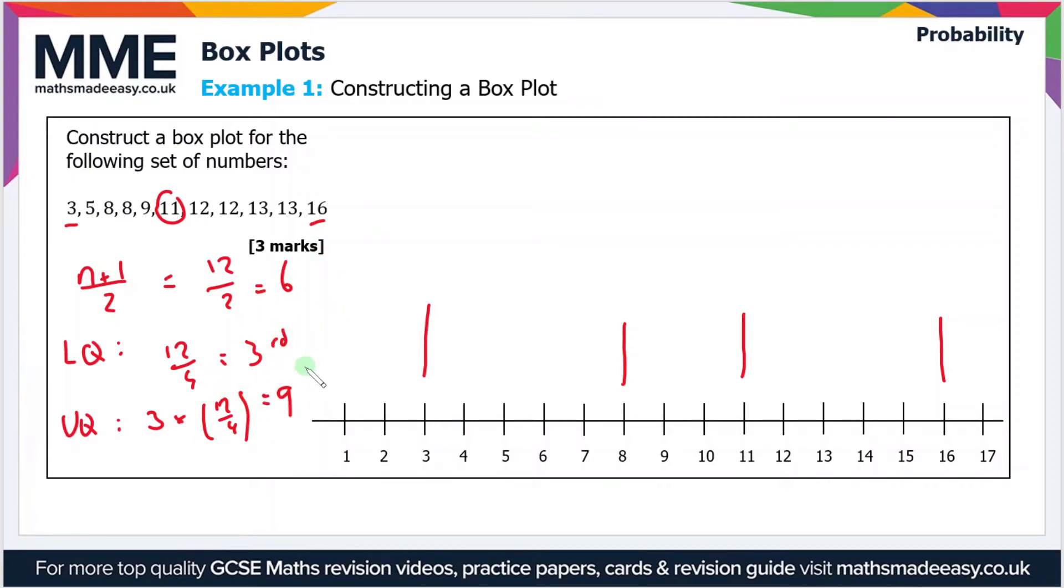So it's the ninth value now that we're interested in. So if we count 9 along we get 1, 2, 3, 4, 5, 6, 7, 8, 9. So the ninth value is 13.